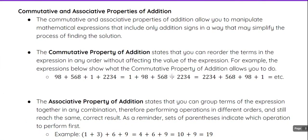We are going to look at the commutative and associative properties of addition. These properties allow you to manipulate mathematical expressions that include only addition signs in a way that may simplify the process of finding the solution. Both of these properties can help you with some mental math in terms of what numbers might work better or easier together when you're adding.